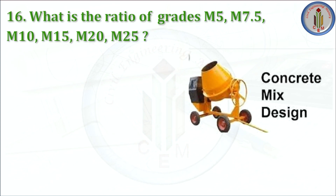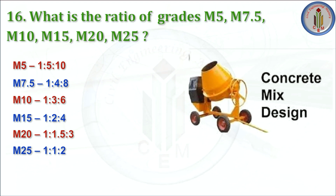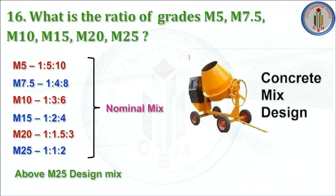Next: what are the mix ratios for grades M5, M7.5, M10, M15, M20, and M25? M5 is 1:5:10; M7.5 is 1:4:8; M10 is 1:3:6; M15 is 1:2:4; M20 is 1:1.5:3; M25 is 1:1:2. These are all nominal mixes, not design mixes. Above M25, we need to use design mix.